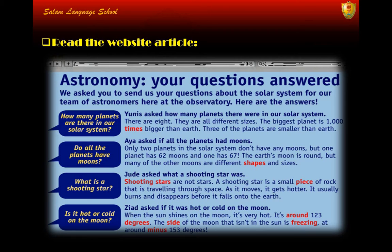There are eight planets and they are all different sizes. The biggest planet is a thousand times bigger than Earth. Three of the planets are smaller than Earth. The second question: do all the planets have moons? It asked if all the planets had moons. Only two planets in the solar system don't have any moons, but one planet has 62 moons and one has 67.